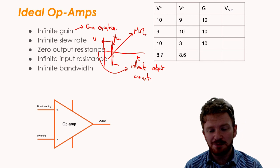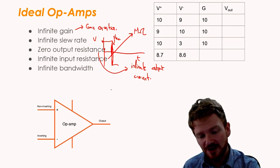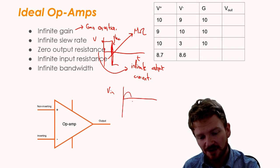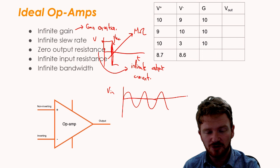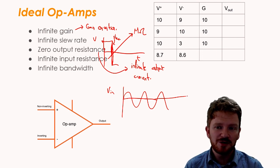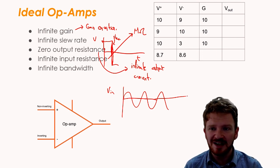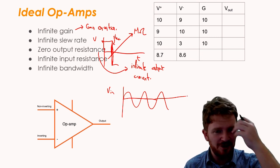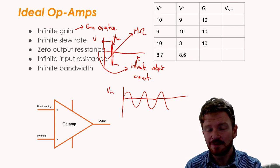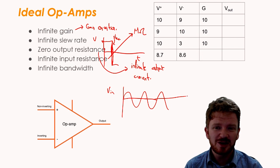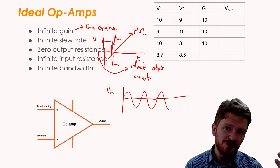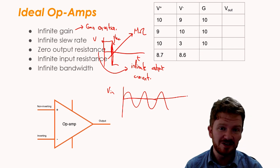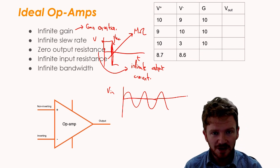I also believe it has infinite bandwidth. What does that mean? Well, that means that if my input voltage is doing this, then we can have a range of different frequencies. What infinite bandwidth means is that we believe that it will operate in exactly the same set of rules, regardless of the frequency of the input. It will act exactly the same. Again, none of these are true, but this is what we pretend is the case to make a lot of the maths easier. If you go on to do an electrical engineering degree, you'll find that a lot of these are actually a little bit different.